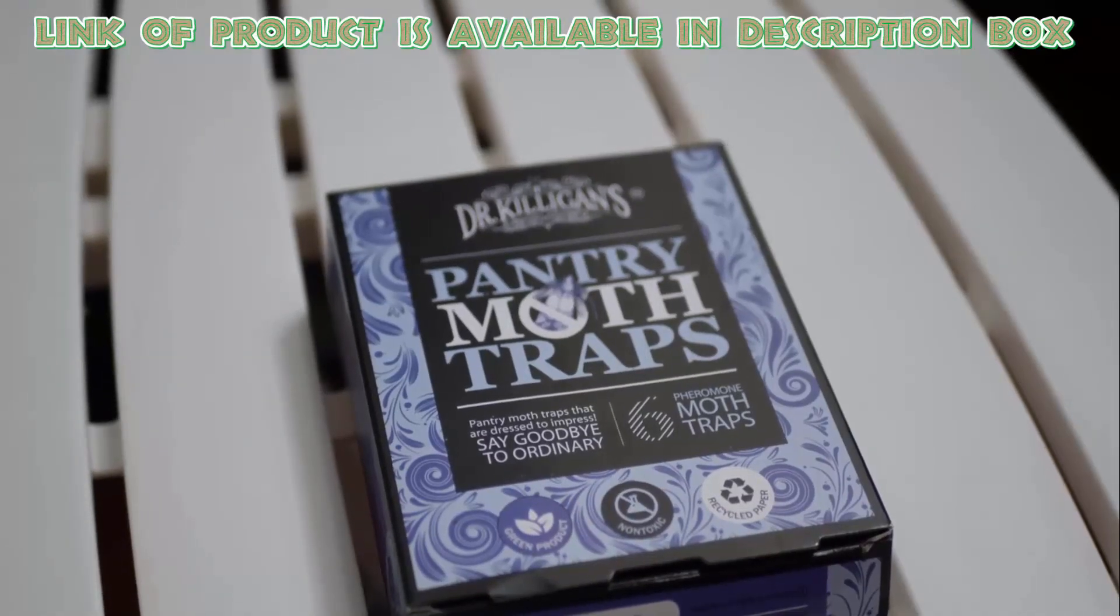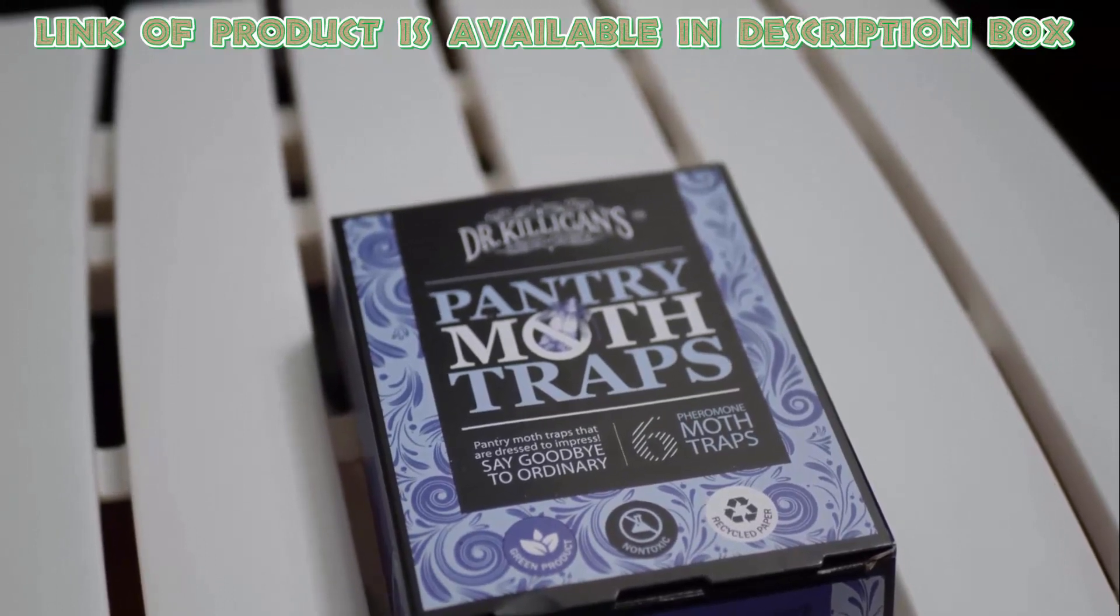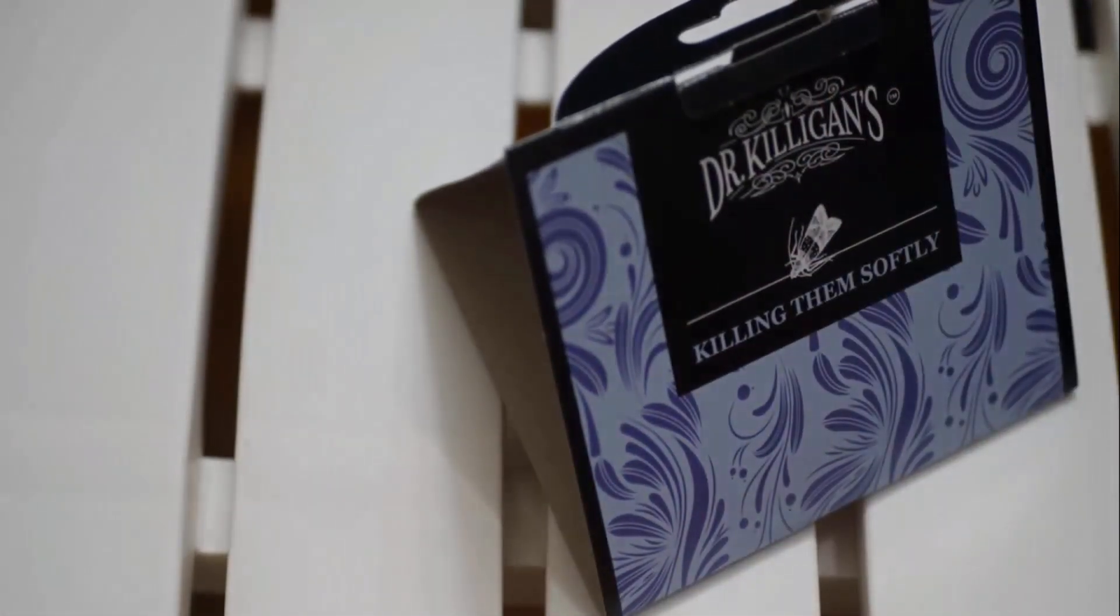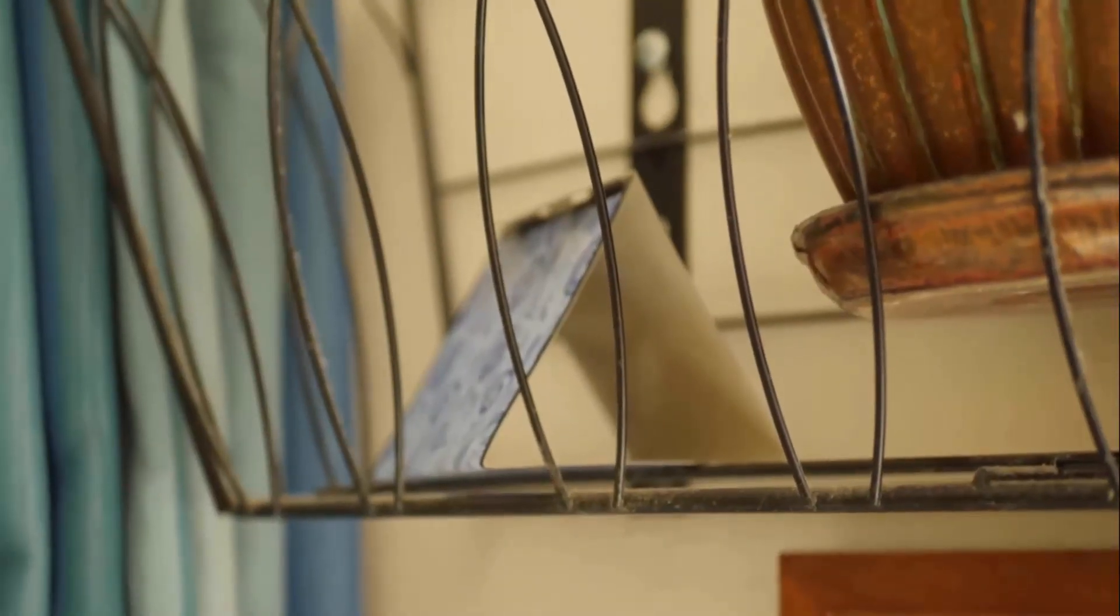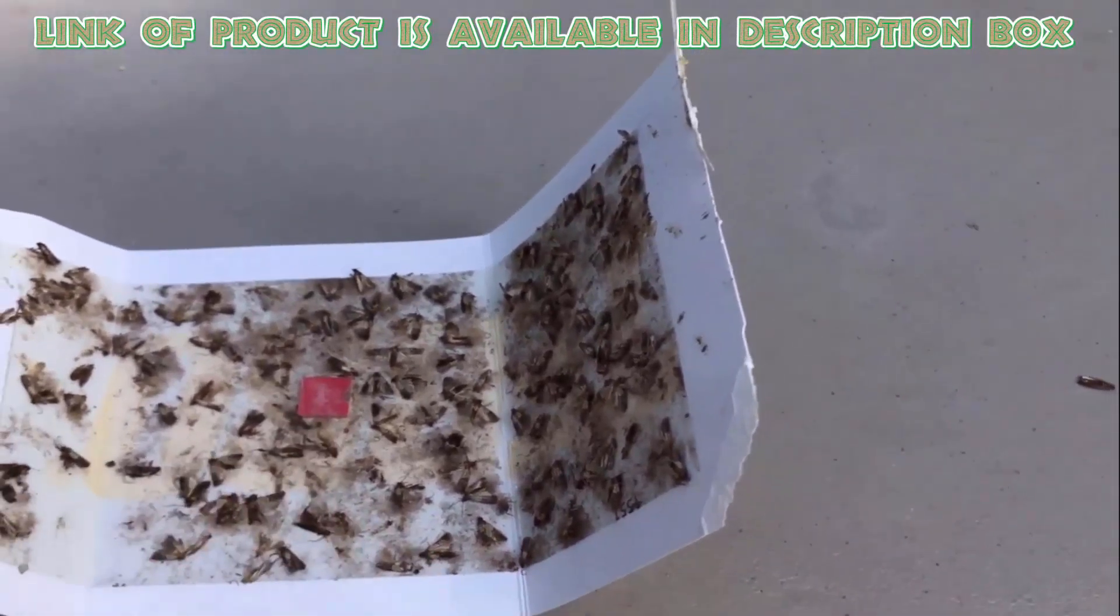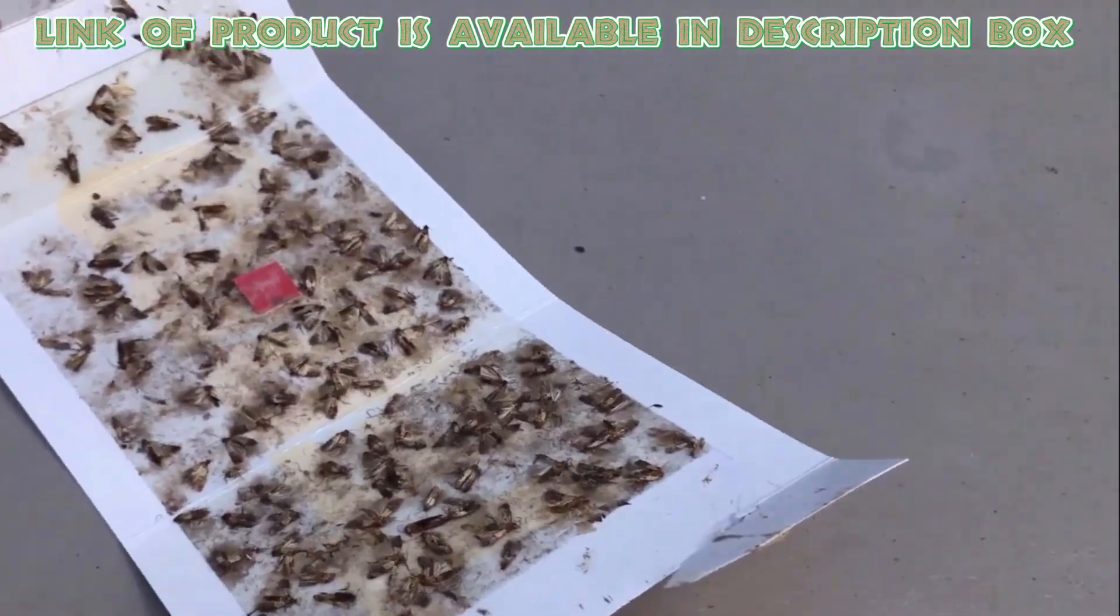Dr. Killigan's premium pantry moth traps are very effective against the moth. You can place traps in every possible place at between three to six feet high. Keep traps away from direct lights. The traps use pheromones to attract male moths. Once inside, they will get stuck to the glue and die.